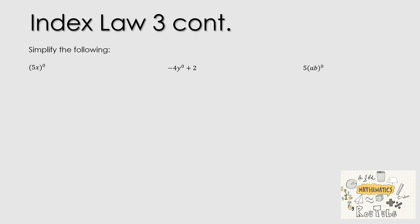Let's look at some more questions relating to the third Index Law. We have (5x) to the power of 0 — similar to the previous question, but the only difference is the brackets. The brackets change things. Because we have the brackets, the 0 belongs to everything inside them. So the 0 belongs to both the x and the 5 — it belongs to the 5x. Since anything to the power of 0 equals 1, the whole bracket is equal to 1.